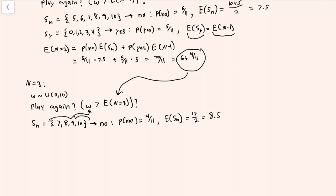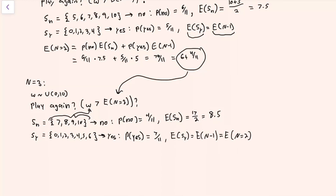We would play the game again if we draw 0, 1, 2, 3, 4, 5, or 6. The probability of drawing any of those is 7 out of 11 possible values W could take. If we do draw one of these, since we started with three rounds and just spent one, the expected value would be the expected value of this game with only two rounds left.